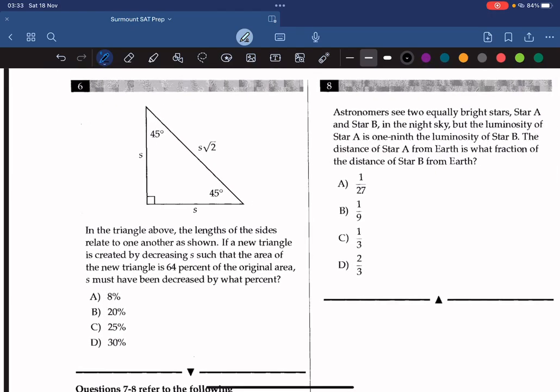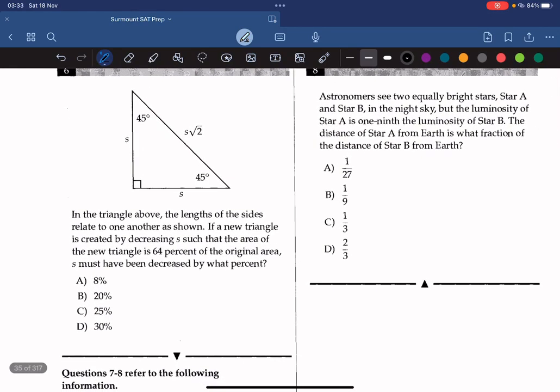Alright, question 6. In the triangle above, the length of the sides relate to one another as shown. If a new triangle is created by decreasing S, such that the area of the new triangle is 64% of the original area, S must be decreased by what percent?